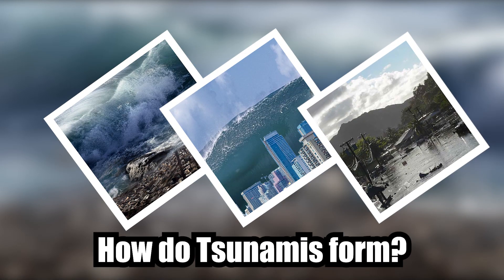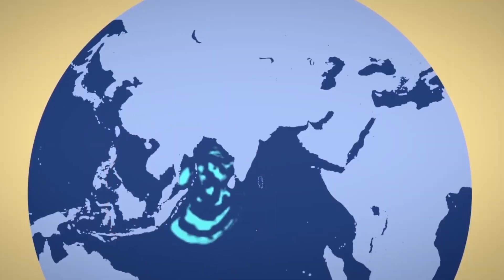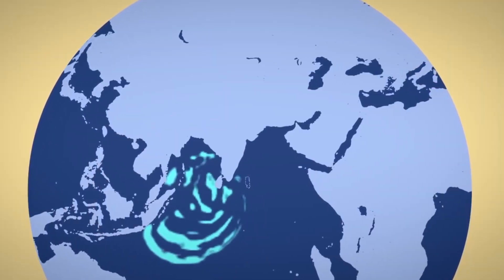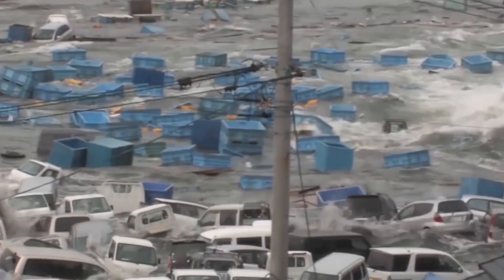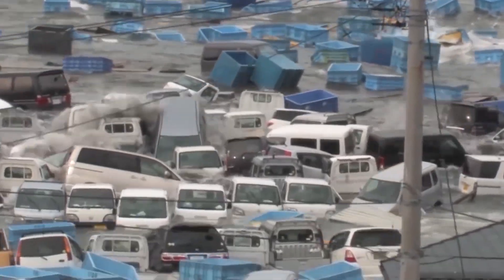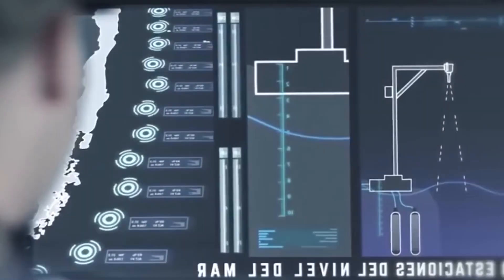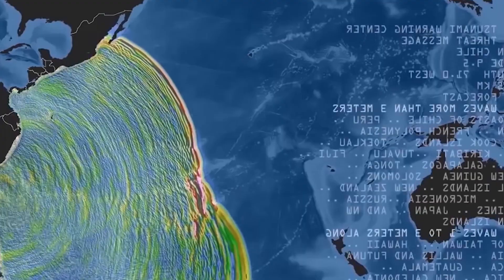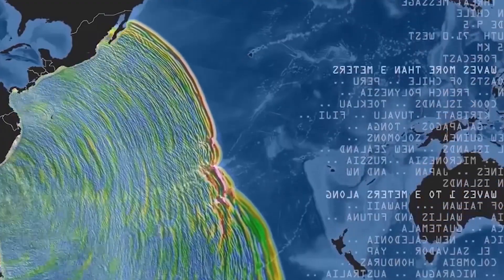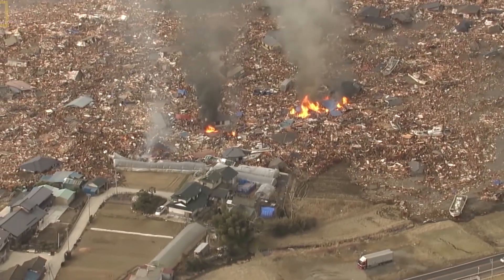How do tsunamis form? Tsunamis are often triggered by earthquakes that occur on the ocean floor. When the earth's tectonic plates move and shift, they can create an enormous amount of energy, which is then transferred to the water above. This energy causes the water to move in a circular motion, forming waves that travel outward from the epicenter of the earthquake.